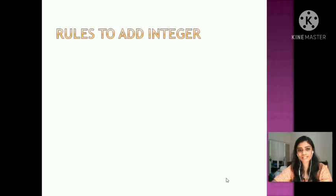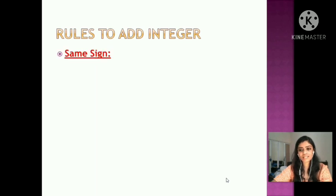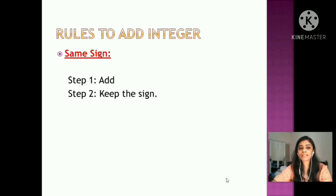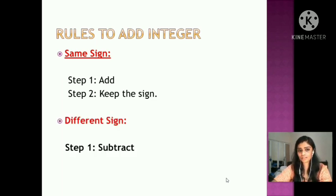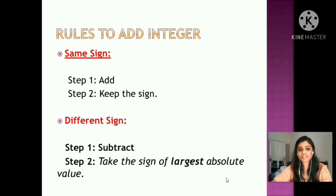There are two rules to consider when you add integers. If the integers have the same sign: step 1, you need to add; step 2, keep the sign. If the integers have a different sign: step 1, you need to subtract; step 2, take the sign of the largest absolute value.